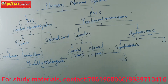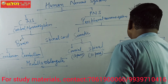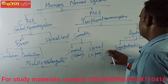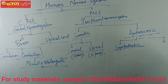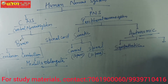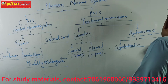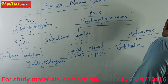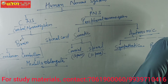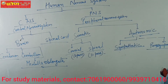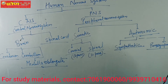One set of the autonomic system is called the sympathetic nervous system, and the other is the parasympathetic nervous system. This is the autonomic and somatic division of the peripheral nervous system. Cranial nerves come in 12 pairs and spinal nerves in 31 pairs.